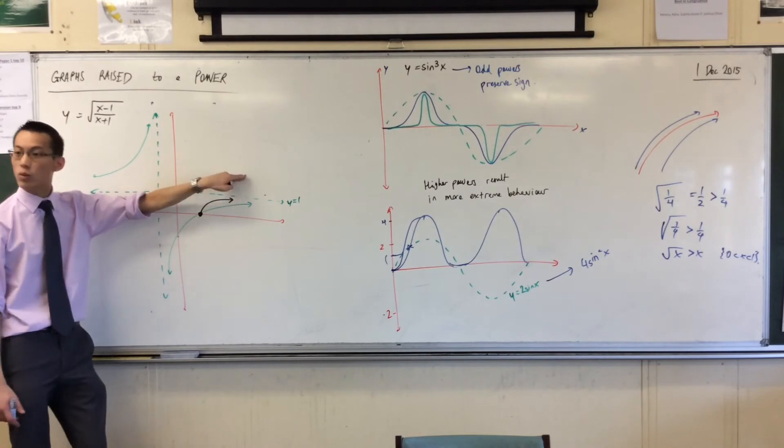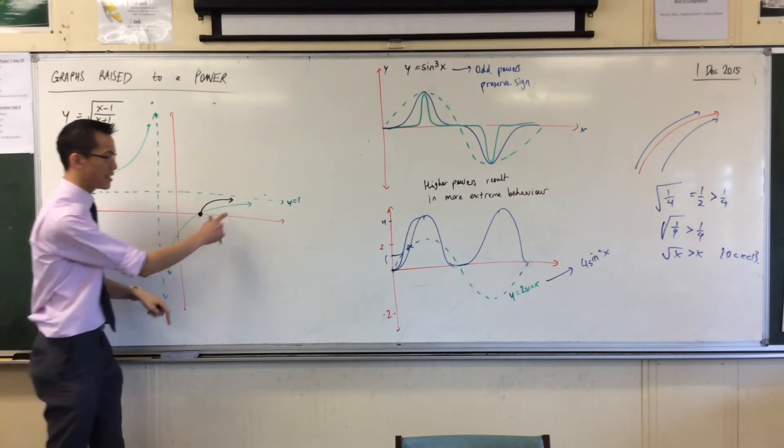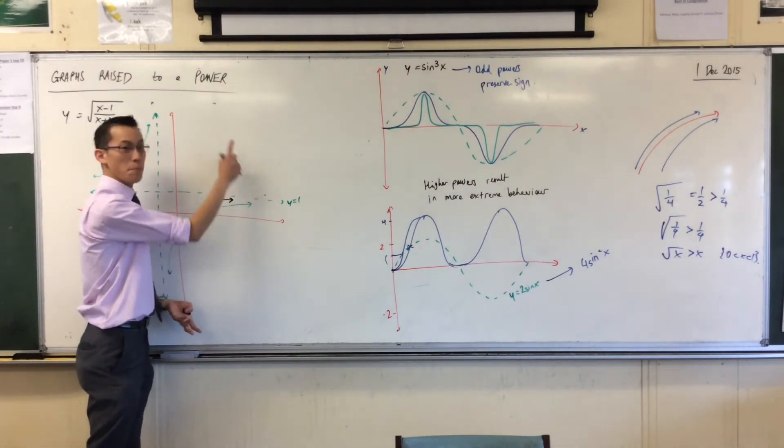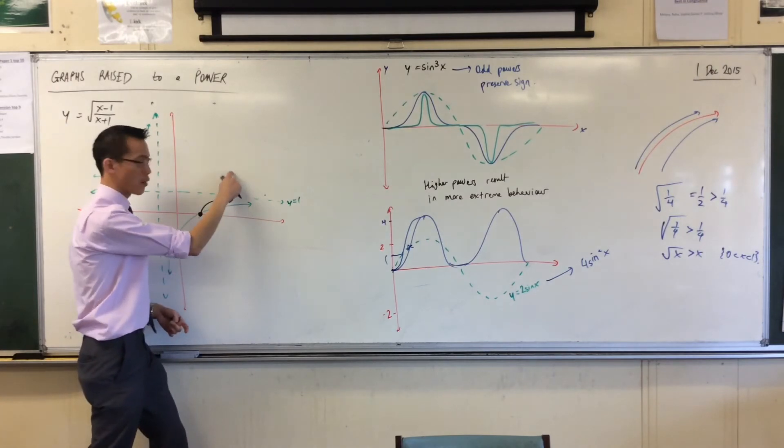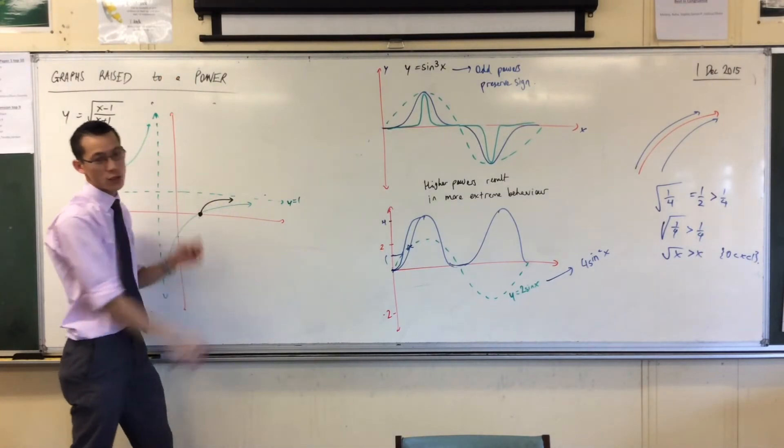Yep. I know I can't cross the acetate, because to get above y equals 1, I would need to be taking the square root of some number bigger than 1, right? Every number up here, if you square it, will get you higher. And I don't have any of those points to work.